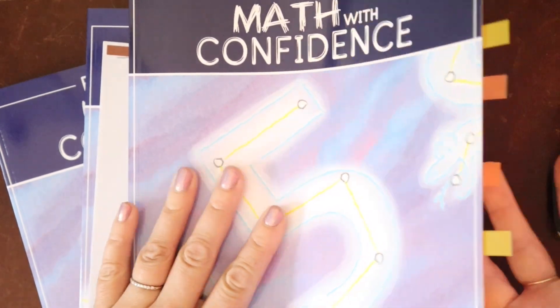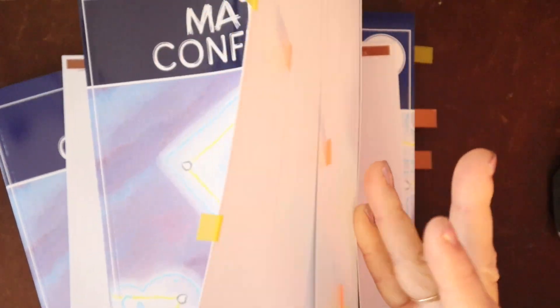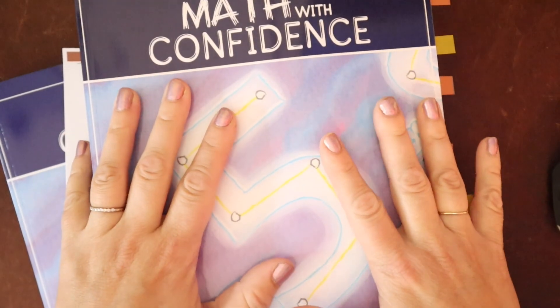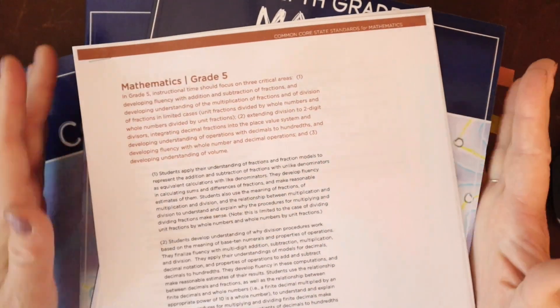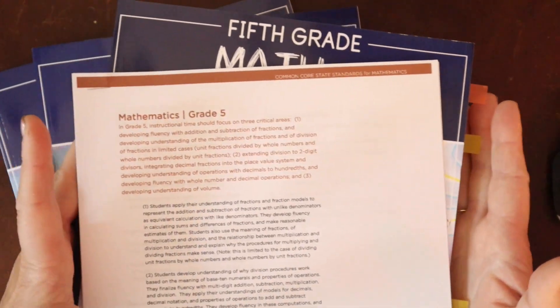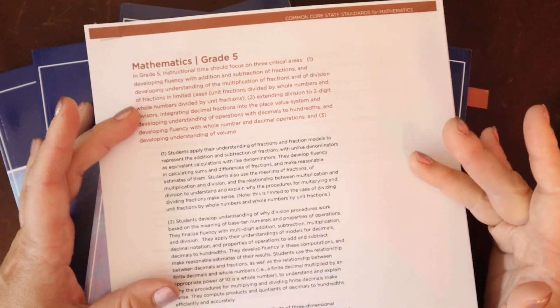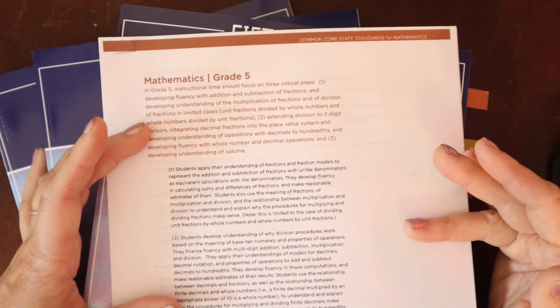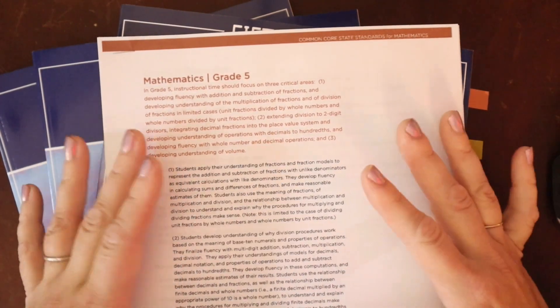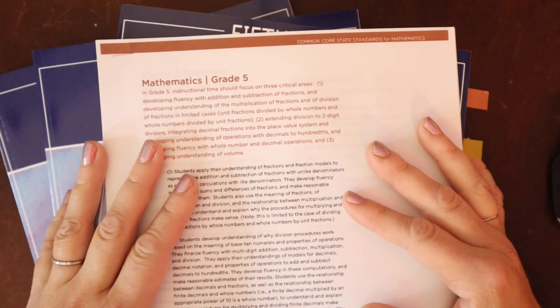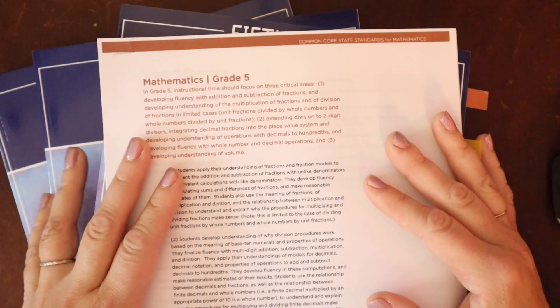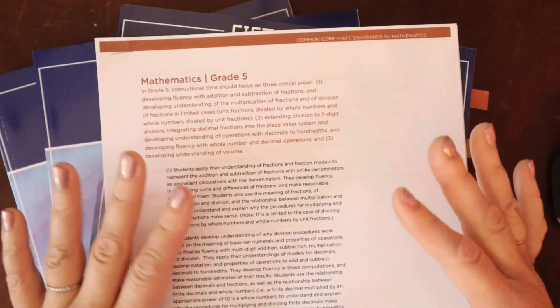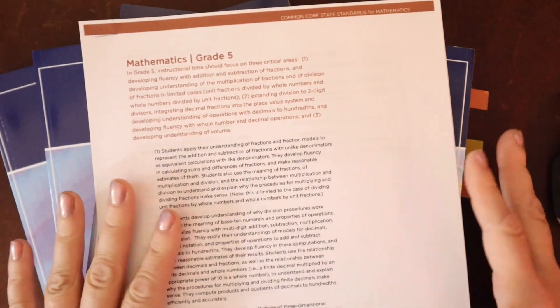So this program is an evidence-based, systematic, and explicit math instruction program. If we look at the 5th grade standards, for those of you who are kind of new to the homeschool world, standards are a way of looking at what typical students in a typical grade level are learning. Obviously with homeschool, there's a lot of variation with where children are in terms of their skills. Grade levels aren't necessarily something that all homeschool families use. So keep that in mind.